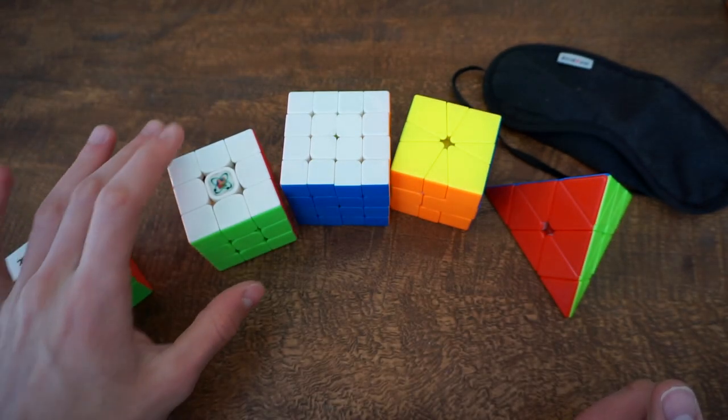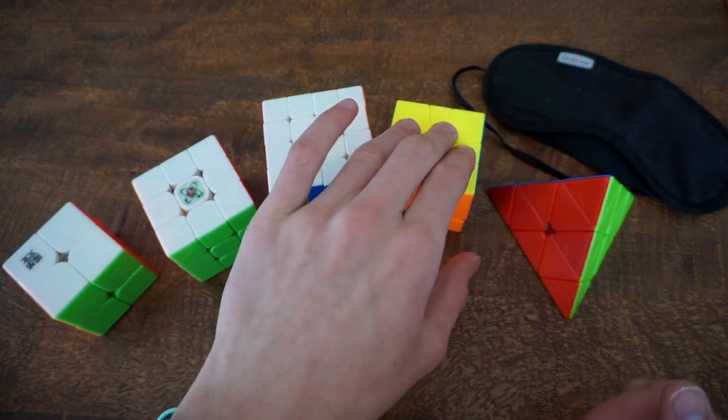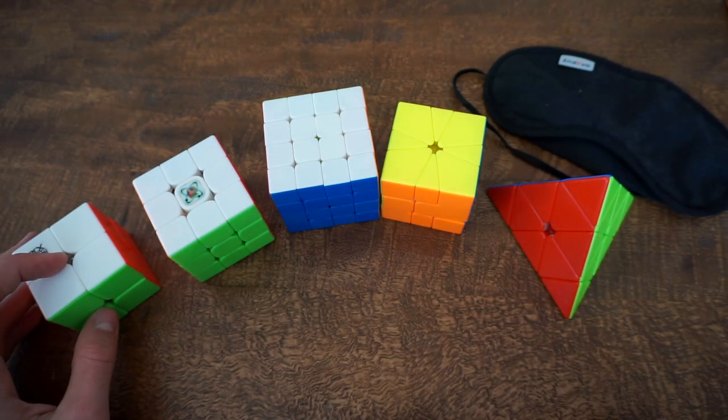2x2, 3x3, one-handed, 4x4, Pyraminx, Square-1, and Blind. And wait, yeah that's seven.